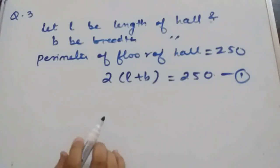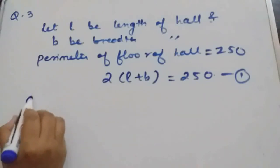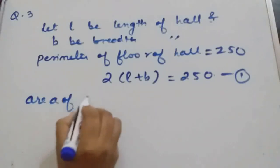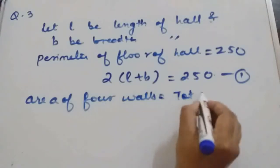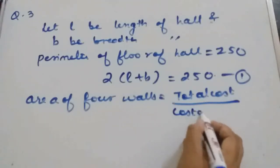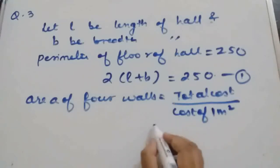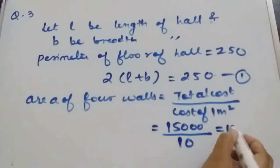Now 2 more thing is given. Total cost is given 15,000 and 1 meter cost is given 10 rupees. So area we can find, isn't it? Area of 4 walls will be total cost of painting divide by cost of 1 meter square area painting. So this is given 15,000 divided by this is given as 10. So answer will be 1,500.